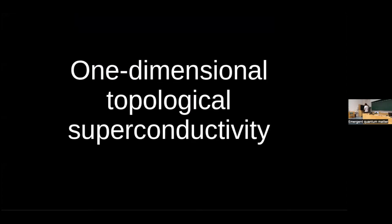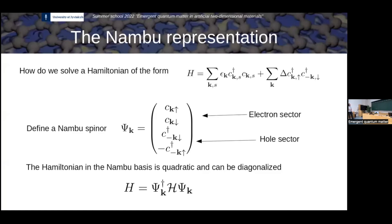So now, in the last part of today's lecture, let's move on to how to engineer unconventional topological superconductors by starting from conventional superconductors. To understand a little bit about topological superconductivity, let me bring up again our Nambu representation for the electronic excitation superconductor. The idea is that we have electrons and holes, and we write down the Nambu Hamiltonian in terms of a new matrix that involves both electron and hole degrees of freedom.